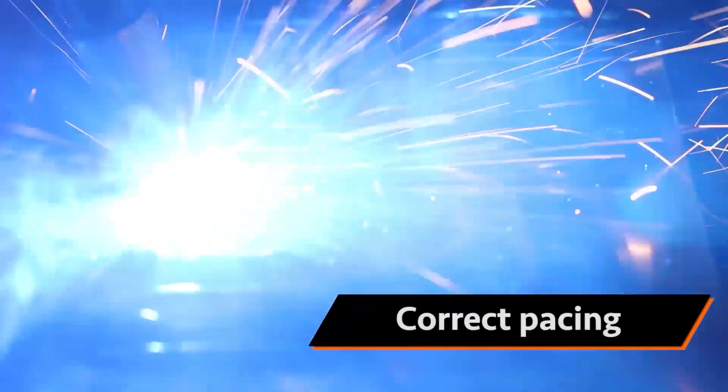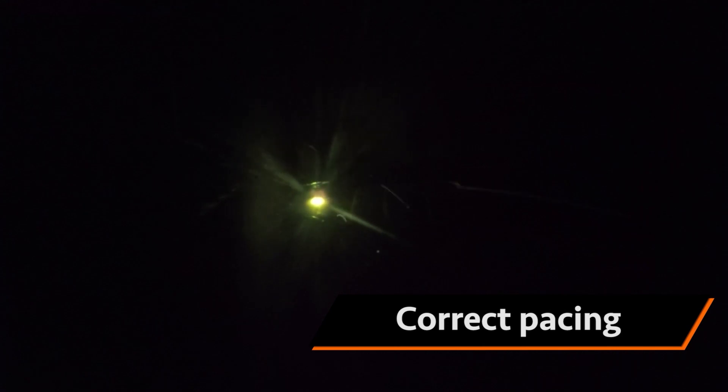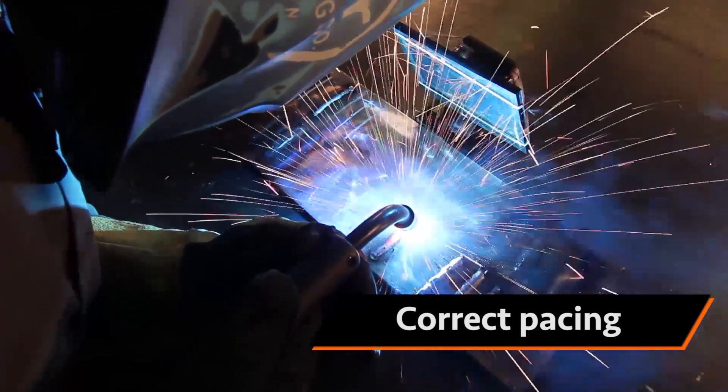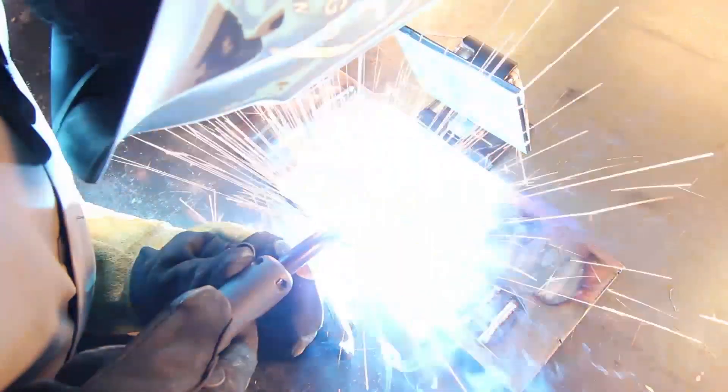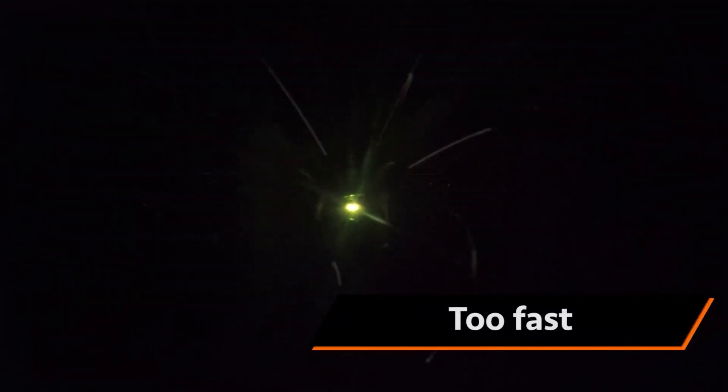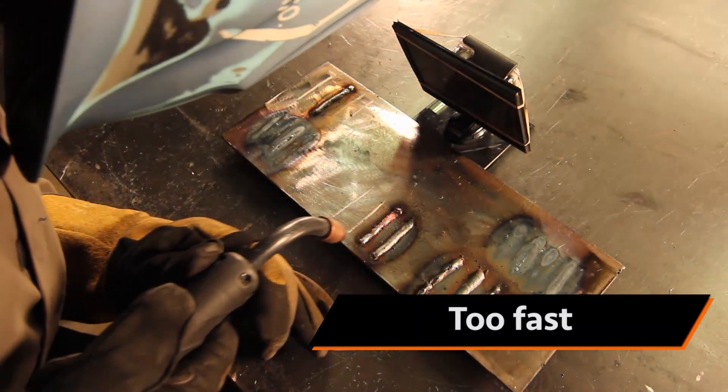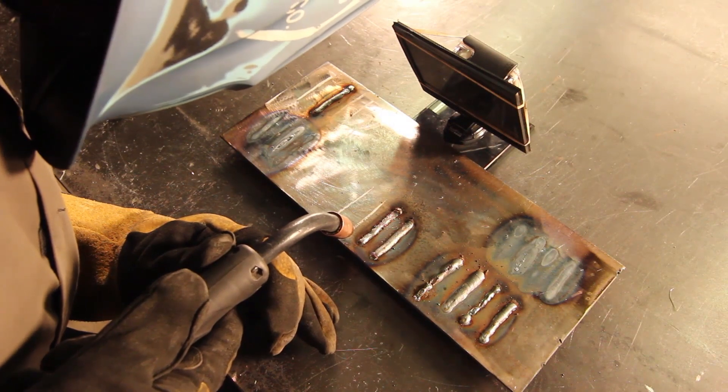I'm going to puddle up first and push through, trying to develop that nice even travel speed. Now on this second weld, you're going to see that I'm going to go almost twice as fast as I did for the first weld. I'm not laying down enough heat or enough filler metal to create the proper size bead for this material.